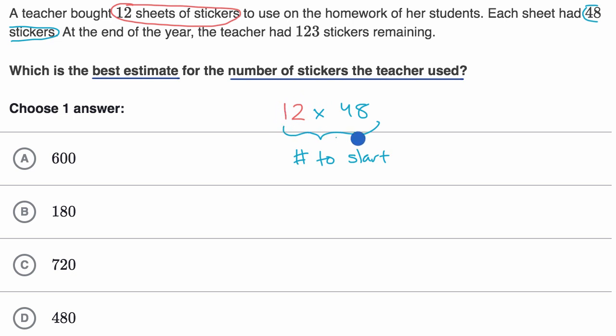And then if we want to figure out the number that are used, we just have to figure out from the number that was started, how many are left over? And then that's how many were used. And so how many were left over? 123 were remaining at the end of the year.